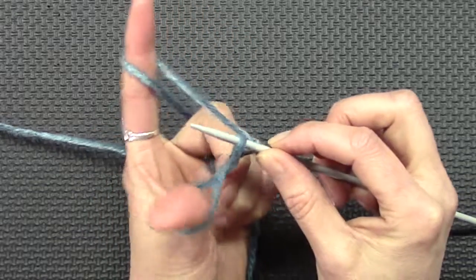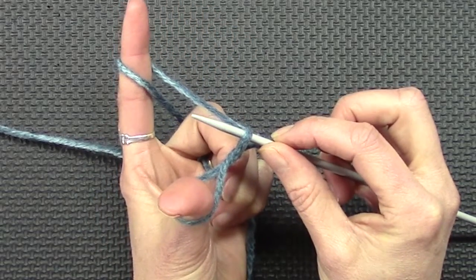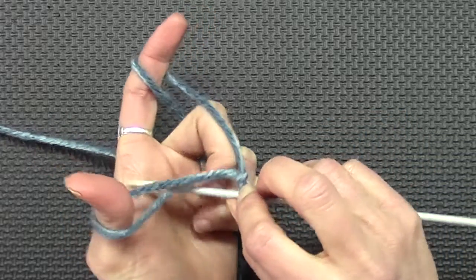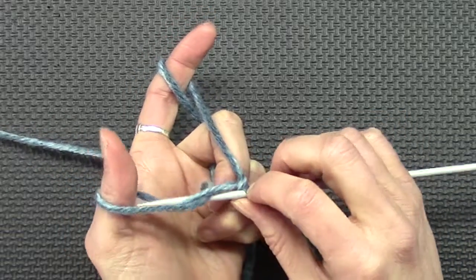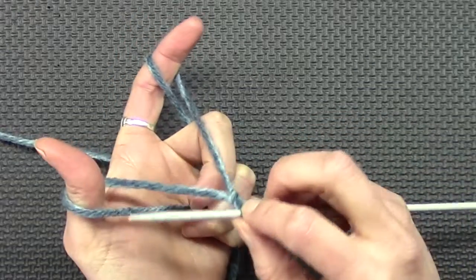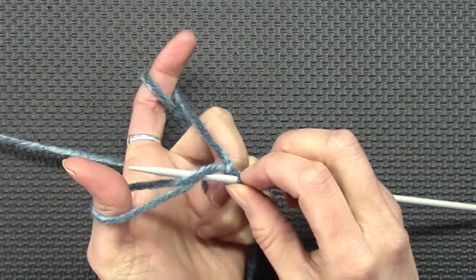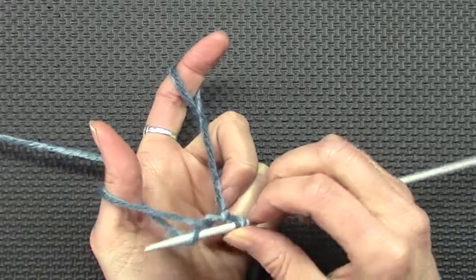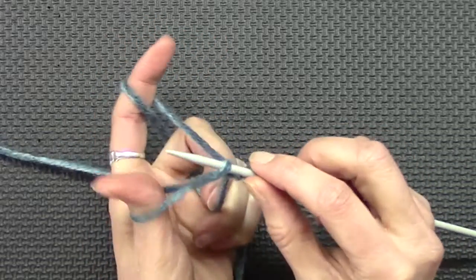And into the loop. Like that. So try that again. Around both yarns into the loop and pull. That's part one. So practice that. Around both yarns and into the loop in your thumb. So that's part one.